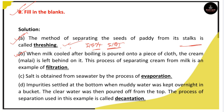When milk is cooled after boiling, it is poured into a piece of cloth. The cream is left behind on it. The process of separating cream from milk is an example of filtration. Salt is obtained from sea water by the process of evaporation.